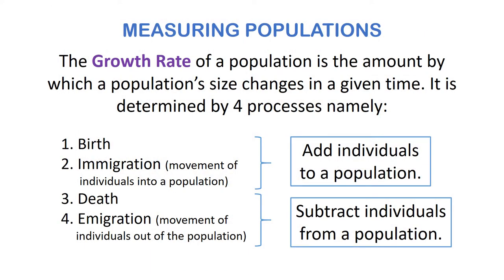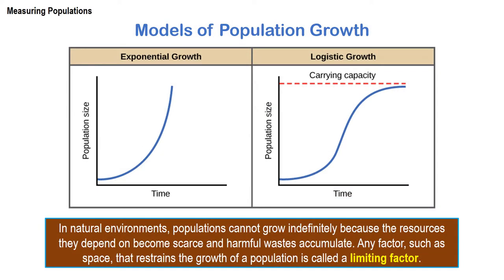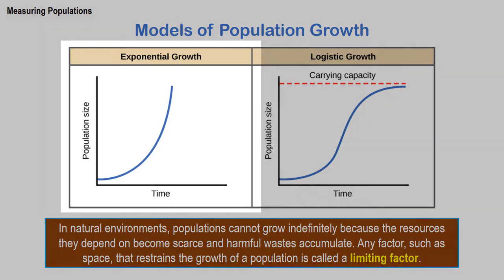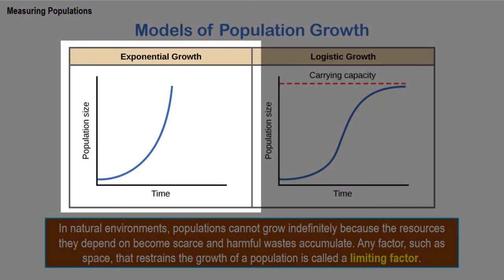Let's now measure population growth and decline. Growth rate of a population is the amount by which population size changes in a given time. It is determined by four processes: birth and immigration, which add individuals to the population, and death and emigration, which reduce population size. As long as the birth rate exceeds the death rate, population size will continue to increase. A pattern of increase due to a steady growth rate is called exponential growth, which will continue indefinitely in theory if there is no limit to resources.